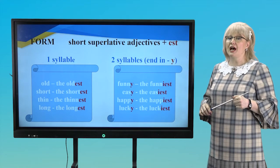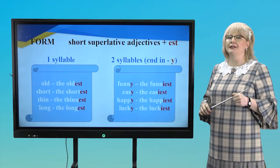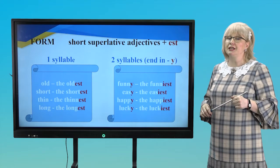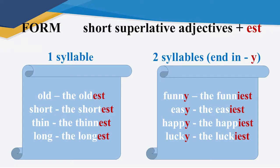And now, if adjectives have two syllables or end in Y, we change Y into I and add EST ending. For example, funny the funniest, easy the easiest, happy the happiest, lucky the luckiest. Ok.